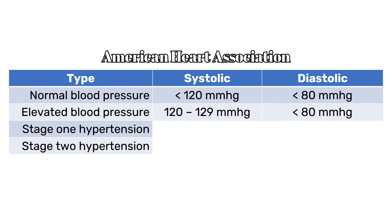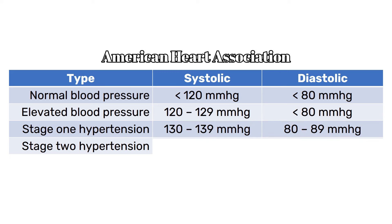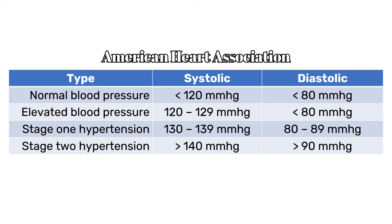According to the American Heart Association, elevated blood pressure is identified when the systolic blood pressure ranges from 120 to 129 millimeters of mercury, while the diastolic blood pressure remains below 80 millimeters of mercury. Stage 1 hypertension occurs when the systolic blood pressure ranges from 130 to 139 millimeters of mercury and the diastolic blood pressure ranges from 80 to 89 millimeters of mercury. Stage 2 hypertension is diagnosed when the systolic blood pressure is above 140 millimeters of mercury and the diastolic blood pressure is above 90 millimeters of mercury.